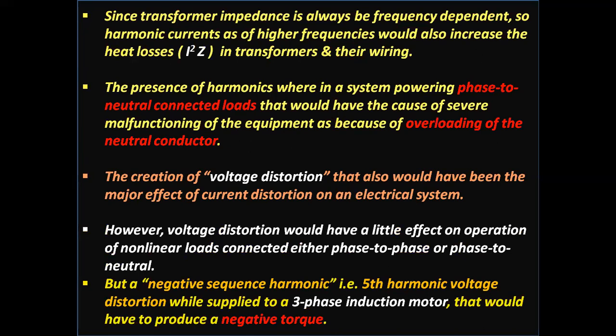Since transformer impedance is always frequency dependent, harmonic currents at higher frequencies increase heat losses — that is I²Z, where Z is the impedance — in transformers and their wiring. The presence of harmonics in a system powering phase-to-neutral connected loads can cause severe malfunctioning of equipment due to overloading of the neutral conductor.